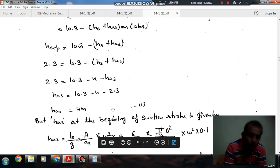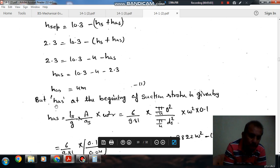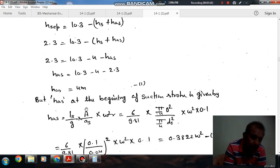So this is just 4 meters, and we know that the acceleration head in the suction pipe is (Ls/g) × (A/As) × ω²R, where Ls is length of suction pipe, As is area of suction pipe, A is plunger area.